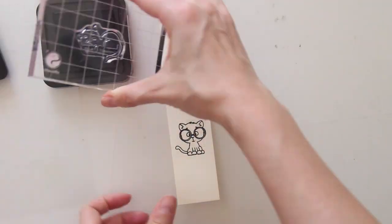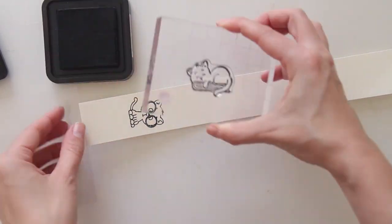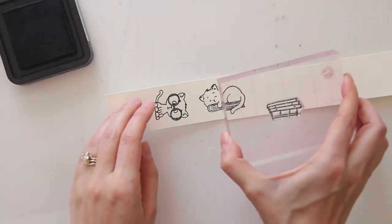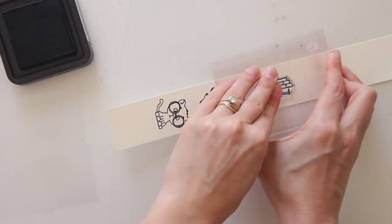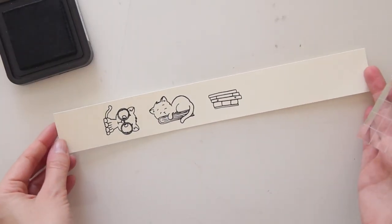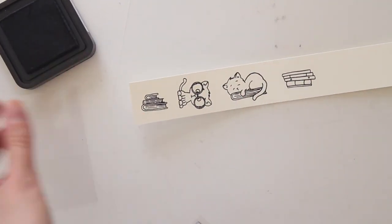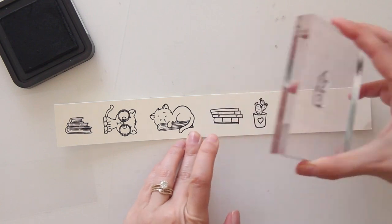For now I'm just stamping all of the images that I know I'll want to include on my bookshelf, and I'm doing that using Black Soot Distress Ink from Tim Holtz. I'm stamping that down on a piece of cream cardstock, and after that I'm going to die cut all of these pieces out and then do some Copic marker coloring.